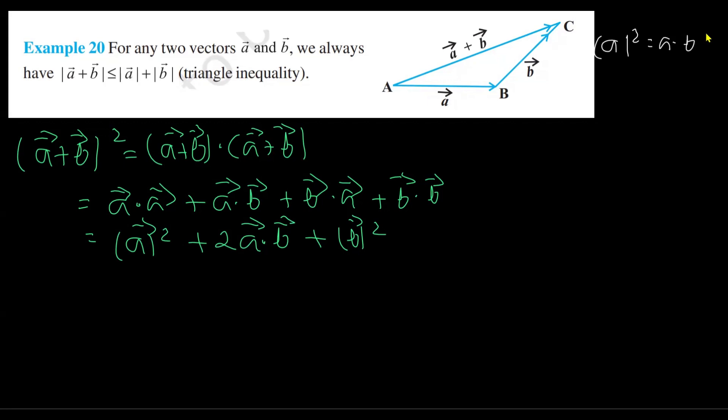Let me write out what a · b can be written as: a · b = |a| |b| cosθ.